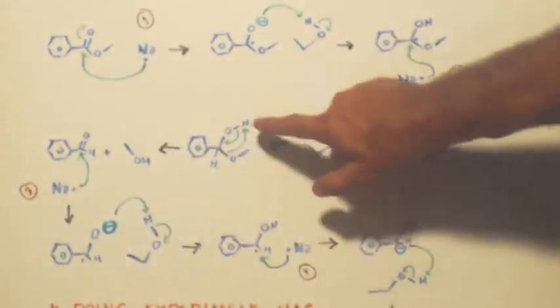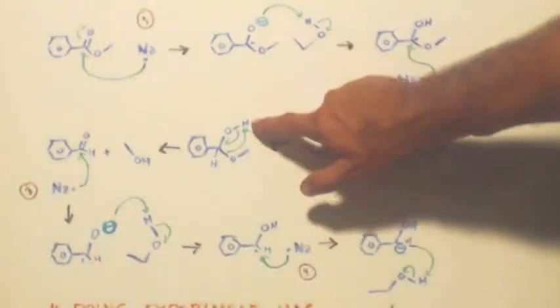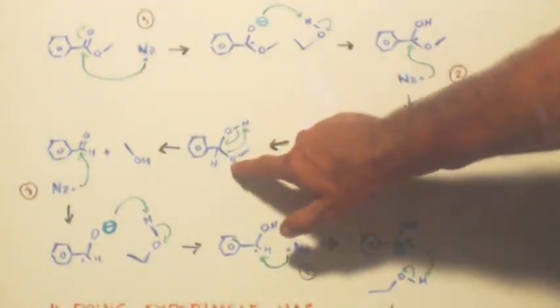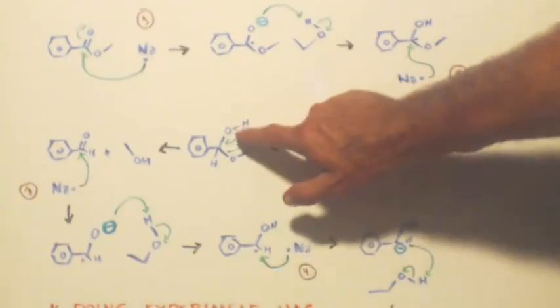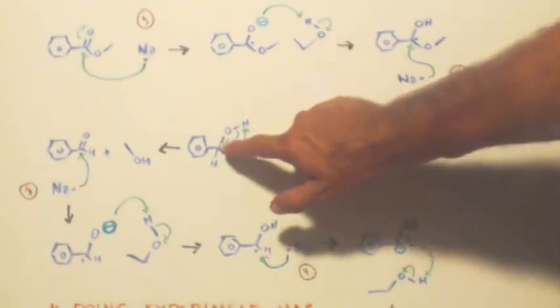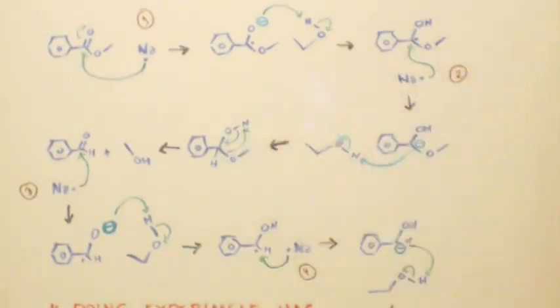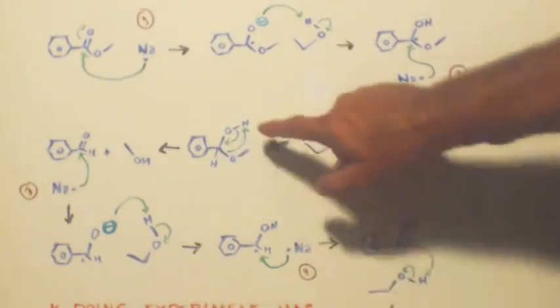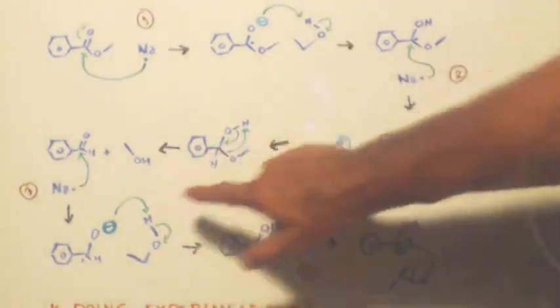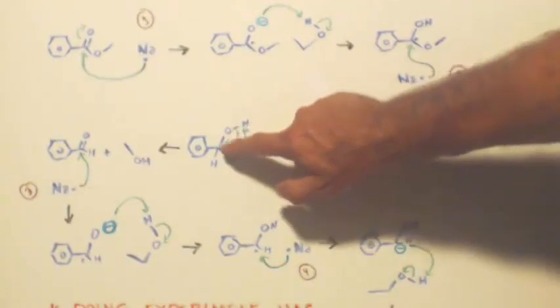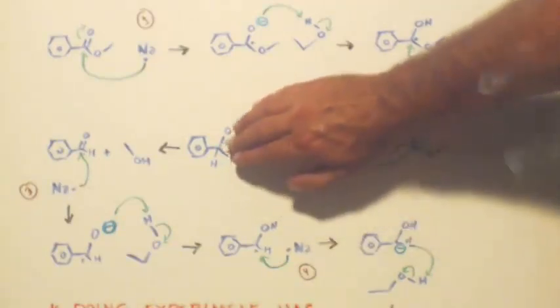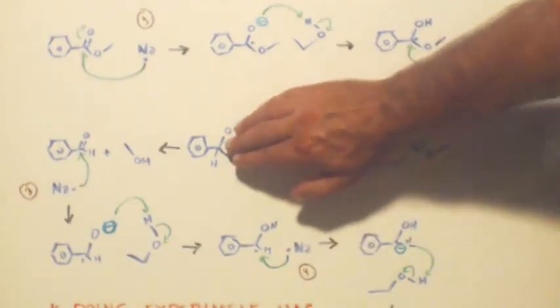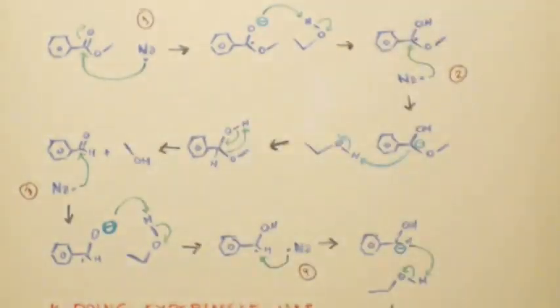But this is the way I think of it. I think this proton here gets transferred to this, and this bond swings down and makes a double bond there. So now you'd have your proton on here to have your methanol, this bond comes down to make a double bond. See how it kind of looks like benzaldehyde, and then you have your benzaldehyde, then it does it again.